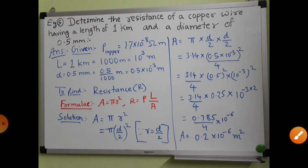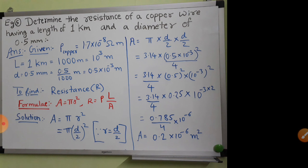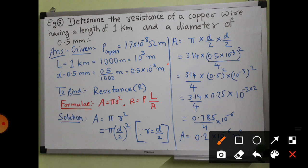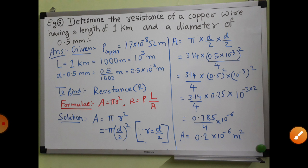Length is given as 1 kilometer. The SI unit of length is meter, so you have to convert kilometers into meters by multiplying by 1000. So 1 kilometer × 1000 = 1000 meters, which can also be written as 10³ meters. Now diameter is 0.5 millimeter, and everything should be in meters.